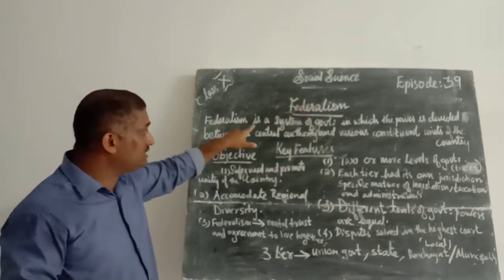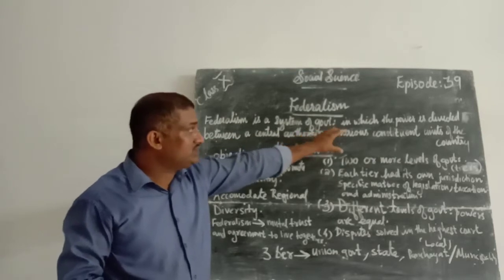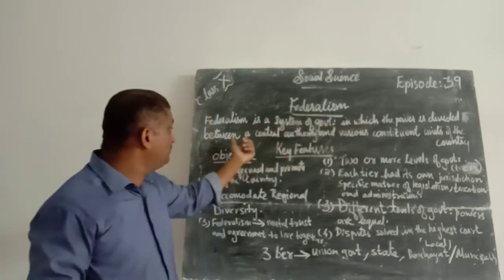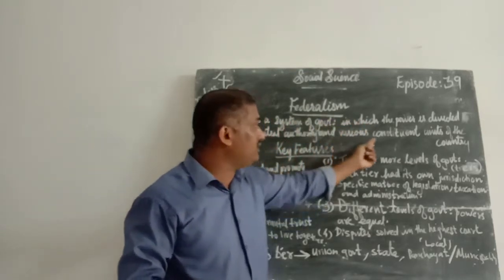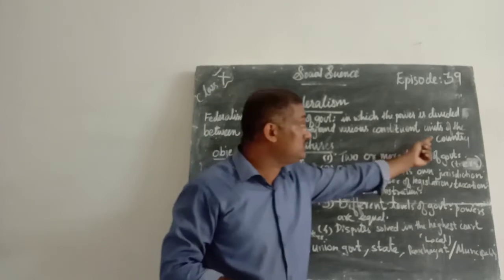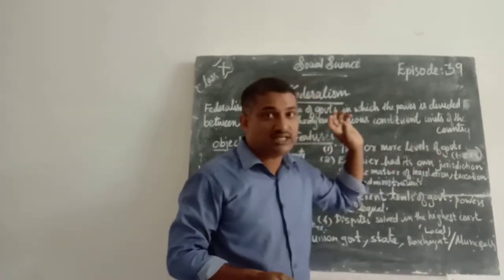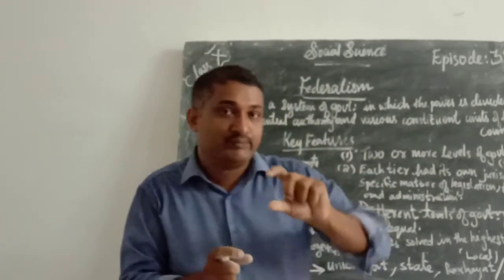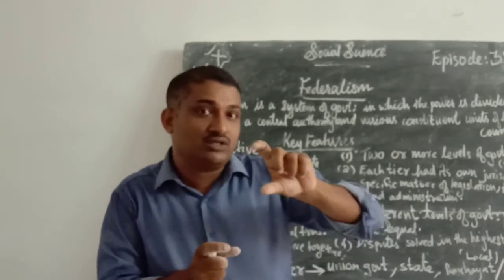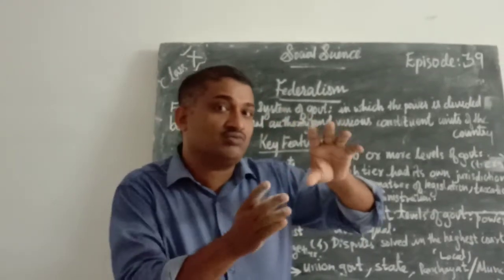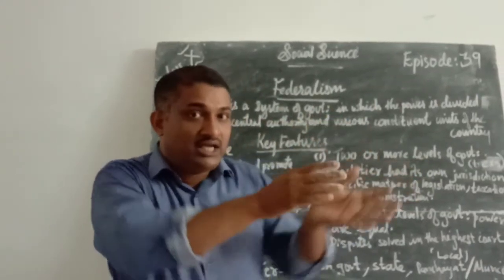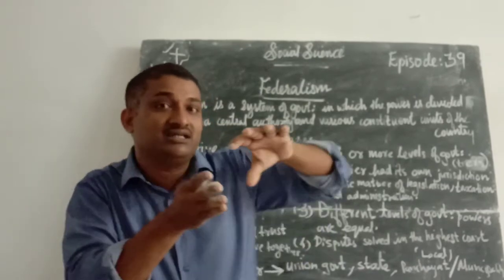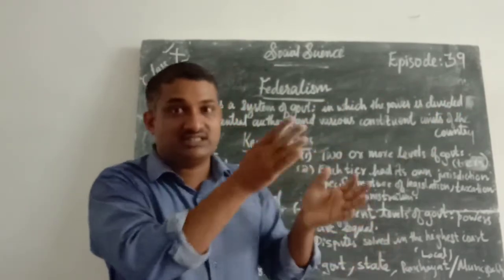Federalism is a system of government in which the power is divided between a general authority and various constituent units of the country. It means that in a federal government, power is not concentrated in one hand. It will be distributed by several levels.